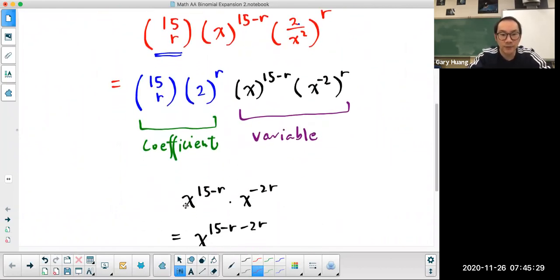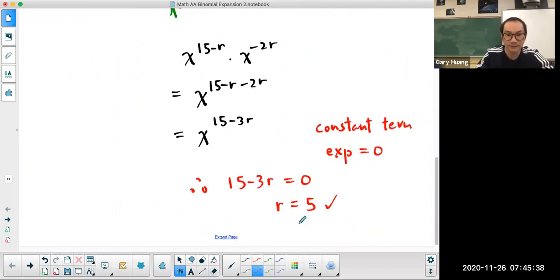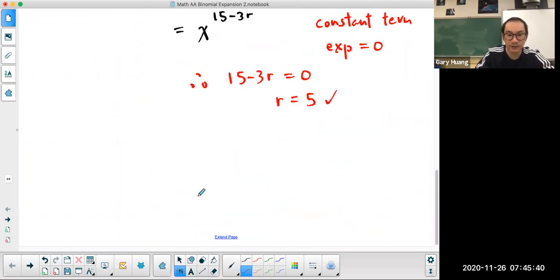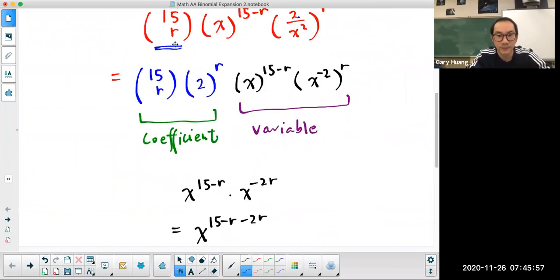So the coefficient or the constant term is simply 15 choose 5 times by 2 to the power of 5. So final answer. Therefore, the constant term is 15 choose 5 and 2 to the power of 5.